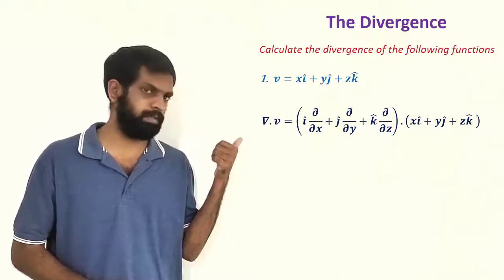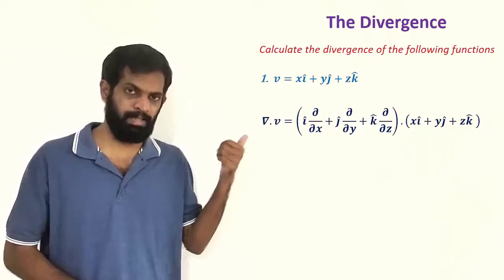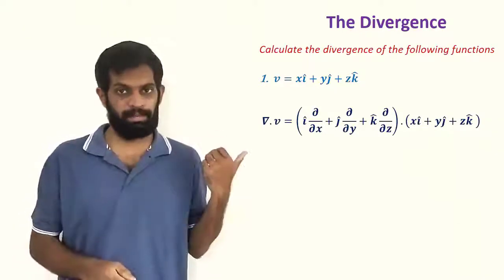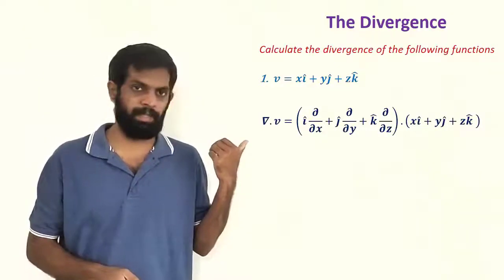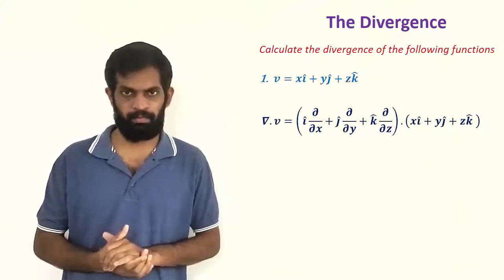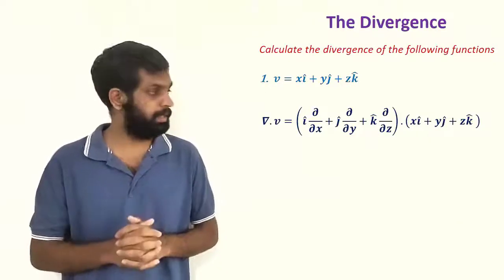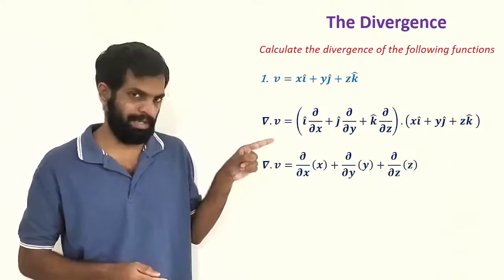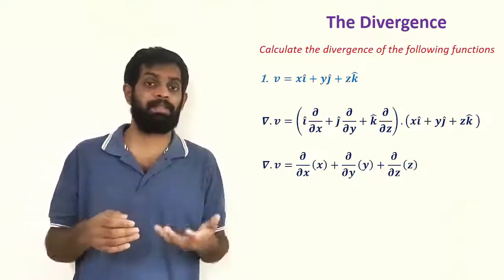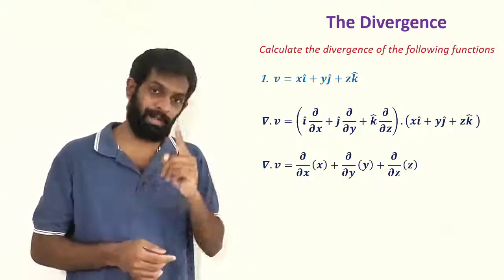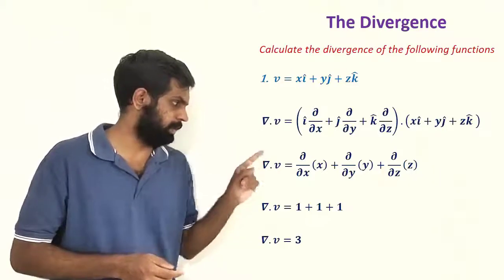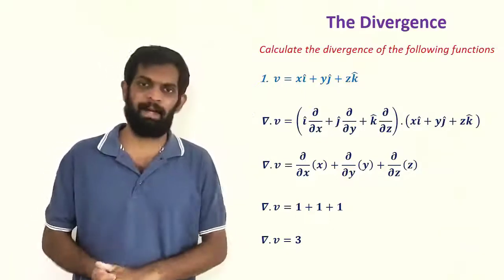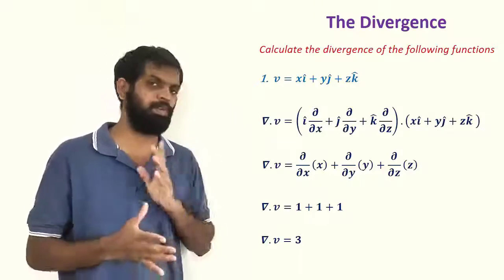Del dot V equals i-cap ∂/∂x plus j-cap ∂/∂y plus k-cap ∂/∂z, dotted with x i-cap plus y j-cap plus z k-cap. Substituting, this gives ∂/∂x of x plus ∂/∂y of y plus ∂/∂z of z, which equals 1 plus 1 plus 1 equals 3. So for this first example, del dot V is equal to 3.